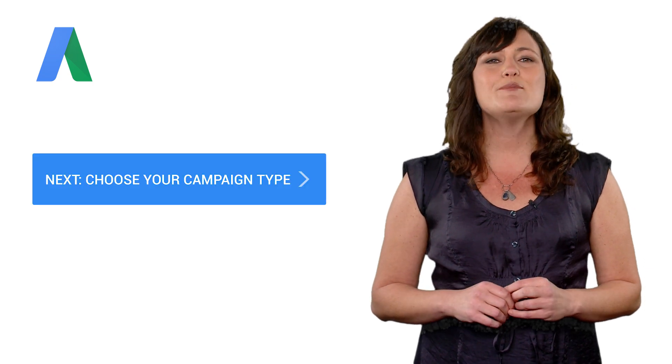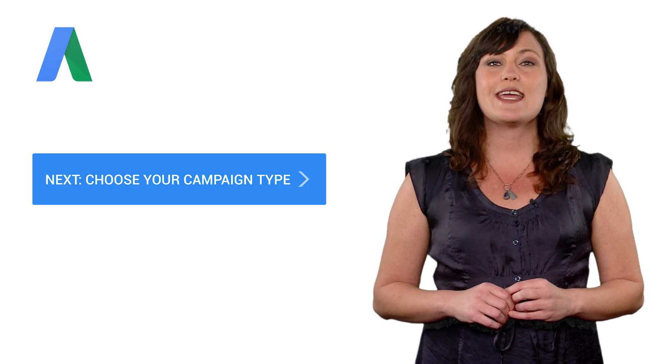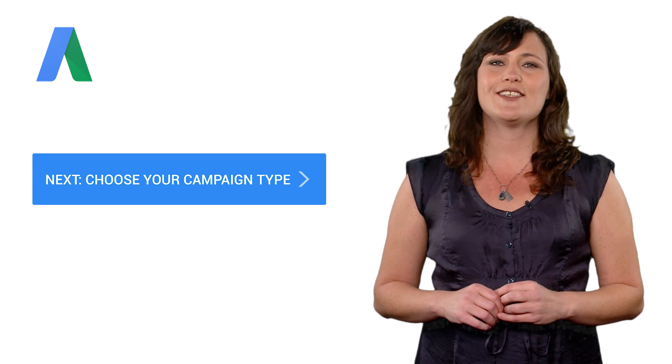Once you know what you want to achieve with your ad campaign, you'll find it much easier to decide which AdWords features can help you get where you want to go. Speaking of going somewhere, let's move on to the next step, choosing the campaign type that's right for you. Click the button to continue.